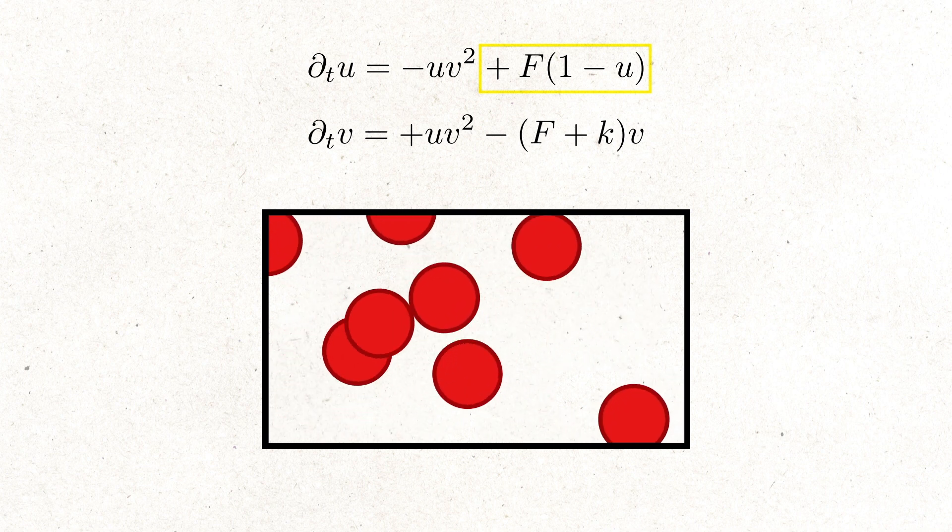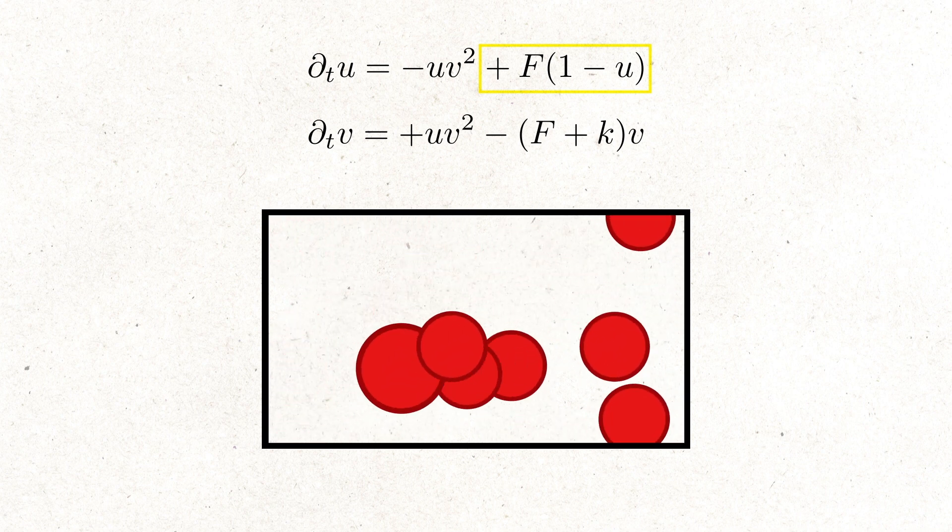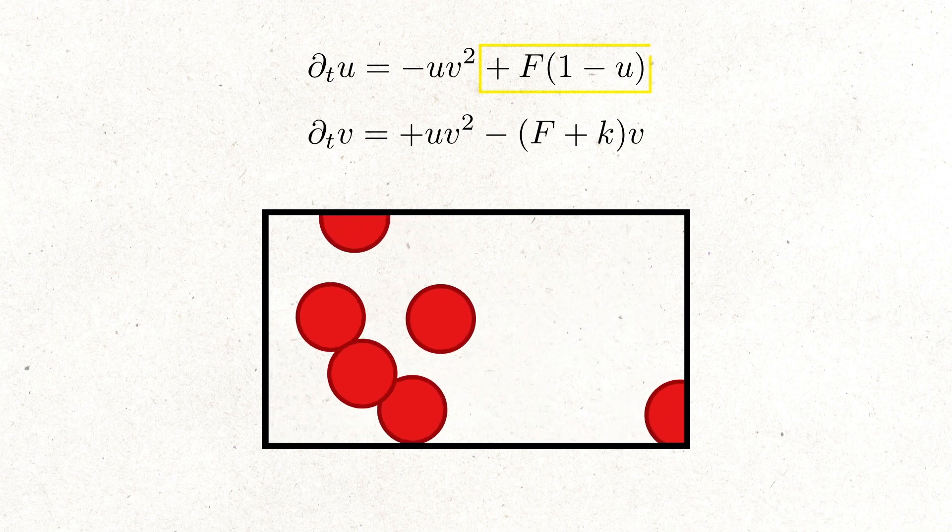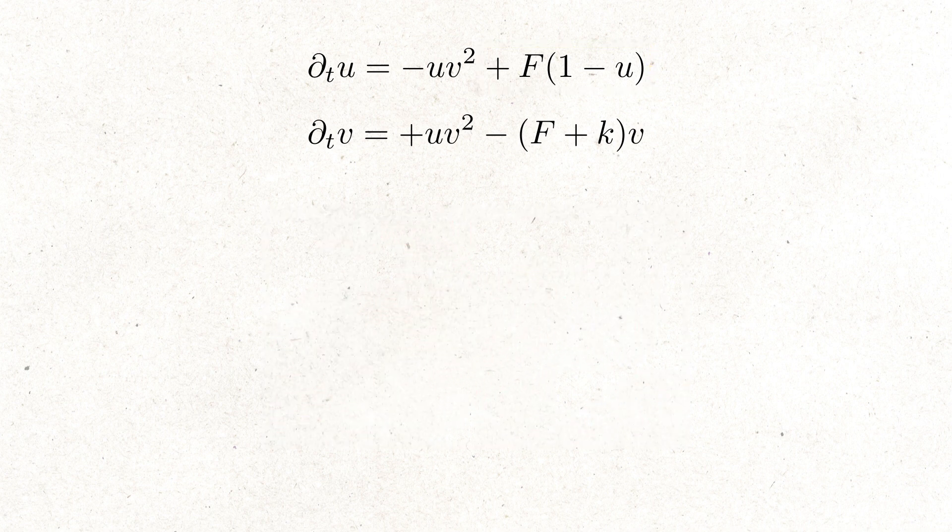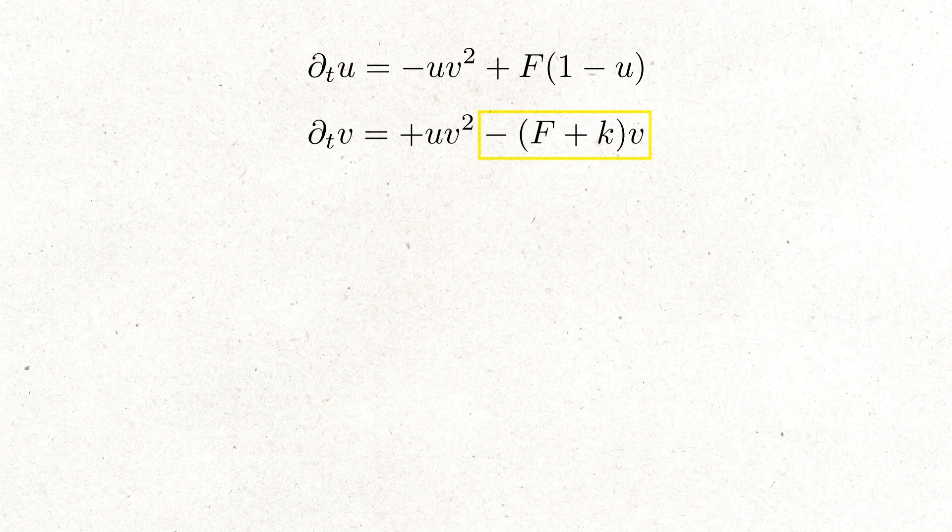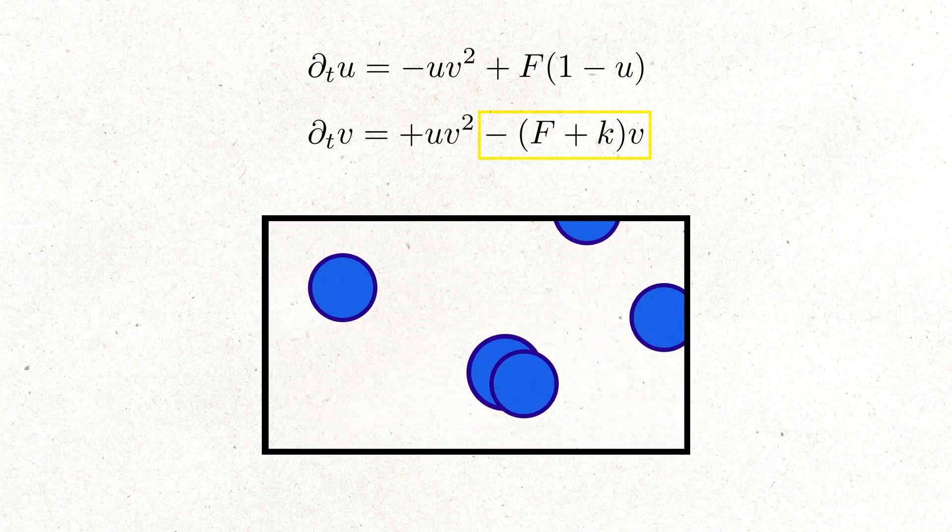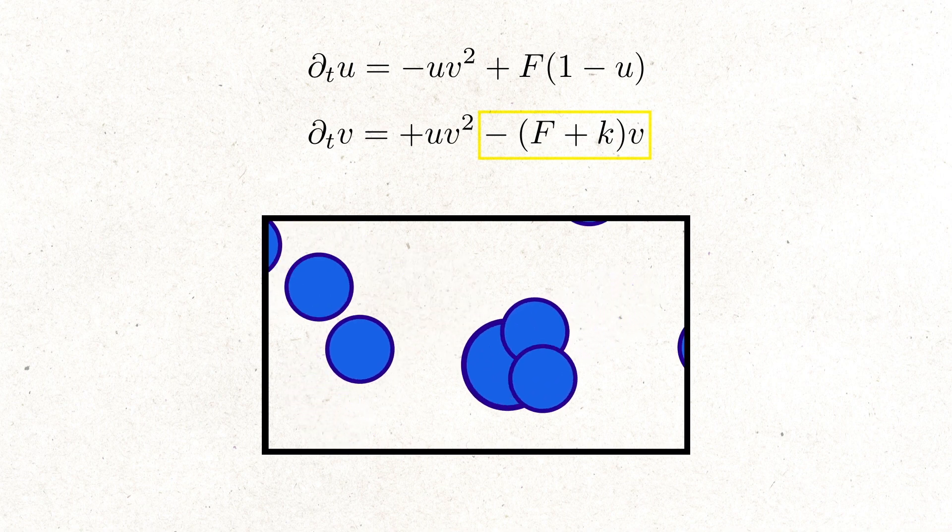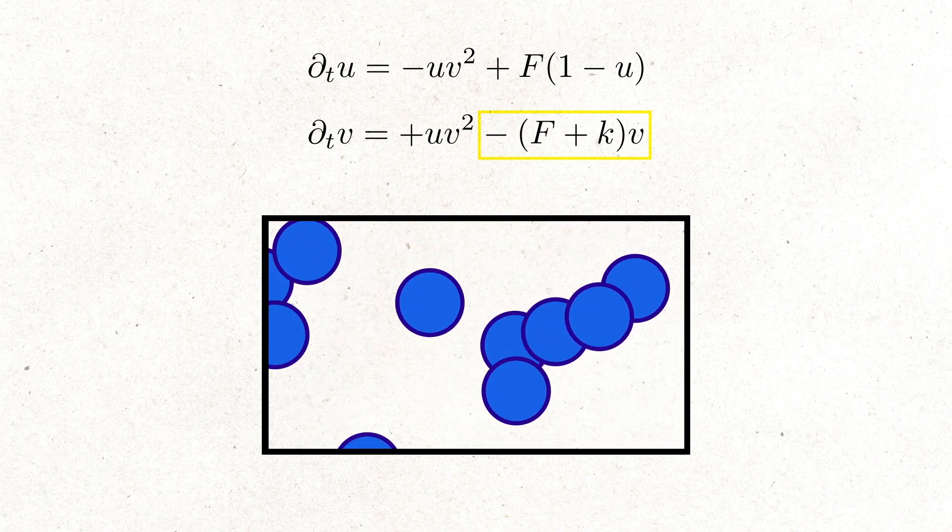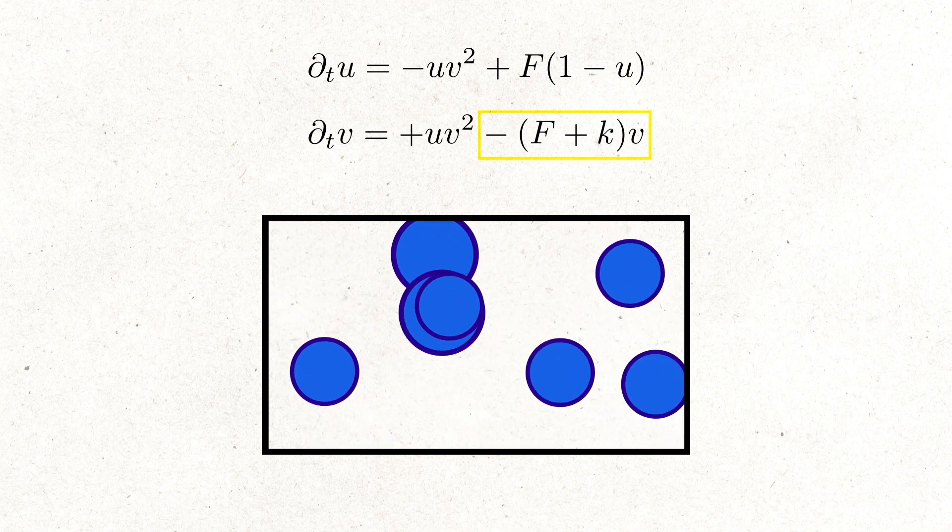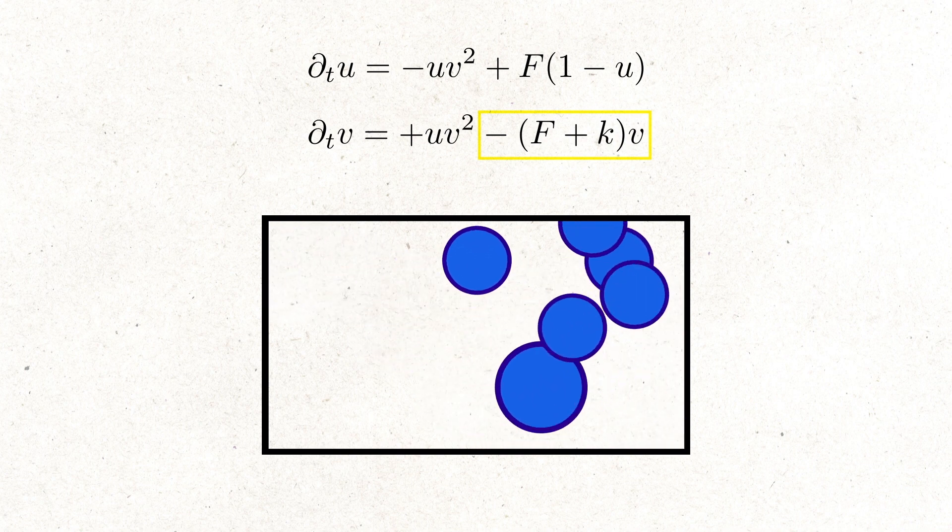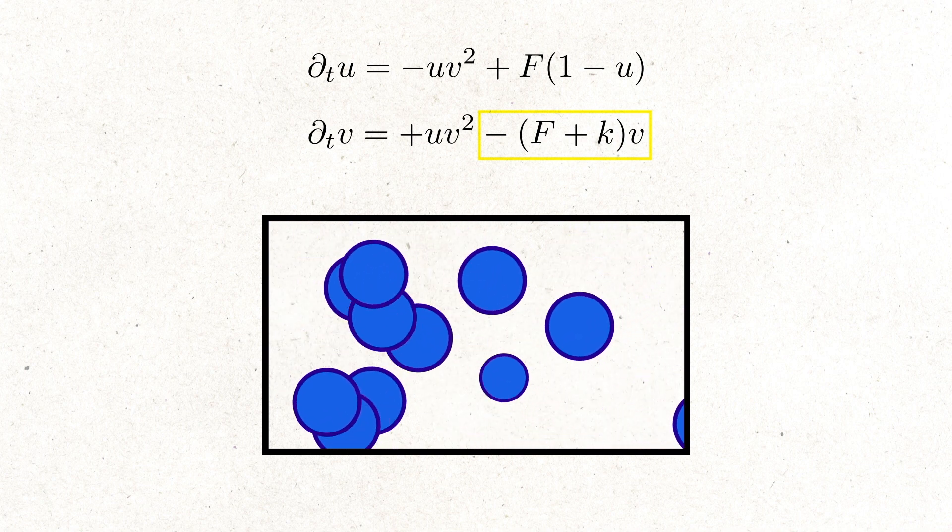And conversely, if we have barely any U, the rate in which U is added is high. The only thing left to understand is the second term in second equation. It describes how substance V is removed by killing rate K. To remove substance V faster than substance U, K is added to F and multiplied by V, since the removal of V is also supposed to be dependent on its concentration.